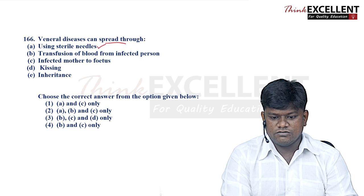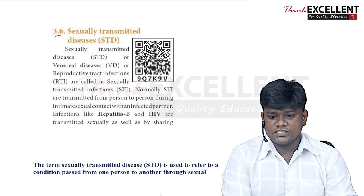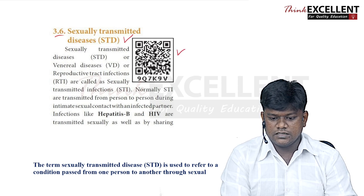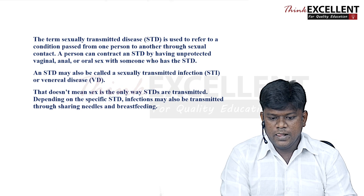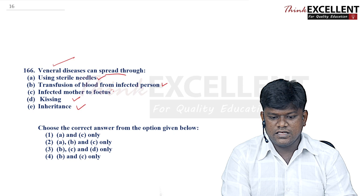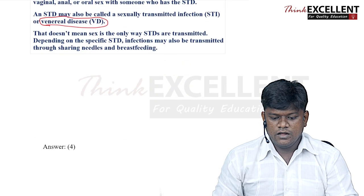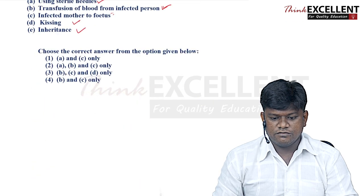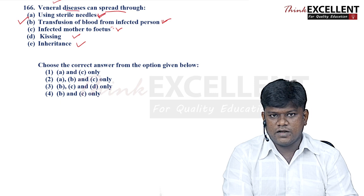Question 166: a venereal disease can spread through using sterile needles, transmission of blood from infected person, infected mother to fetus, kissing, and inheritance. From the state board syllabus on sexually transmitted diseases (STIs/venereal diseases): transmission via sterile needles would NOT spread the disease. So option 4 — transmission of blood from infected person and infected mother to fetus (options B and C) — is the right answer.